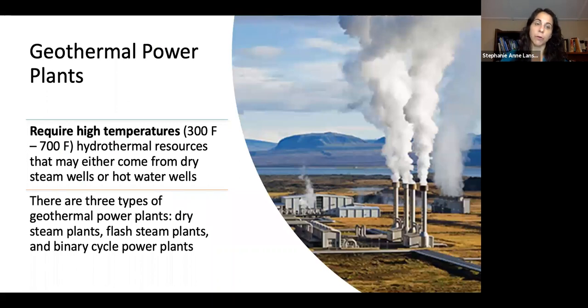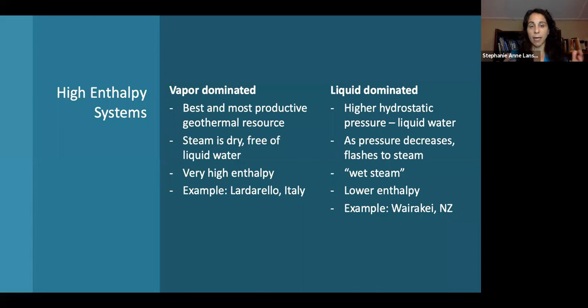Geothermal power plants producing electricity require high temperatures from 300 to 700 degrees Fahrenheit from dry steams or hot water wells. We have dry steam plants, flash plants, and binary cycle plants. High enthalpy vapor-dominated systems with dry steam free of liquid water are most productive. Liquid-dominated systems have higher hydrostatic pressure, and as pressure decreases, they flash to steam. This wet steam drives the turbine.